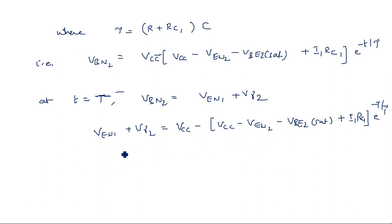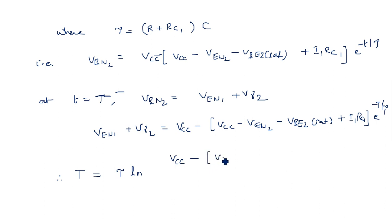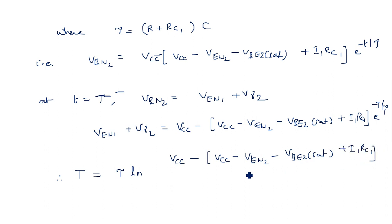Taking the expression onto the left-hand side and applying the natural logarithm on both sides, then multiplying by τ, gives the gate width: T = τ · ln[(VCC − VEN2 − VBE2(sat) + I1·RC1) / (VEN1 + V-gamma2)].